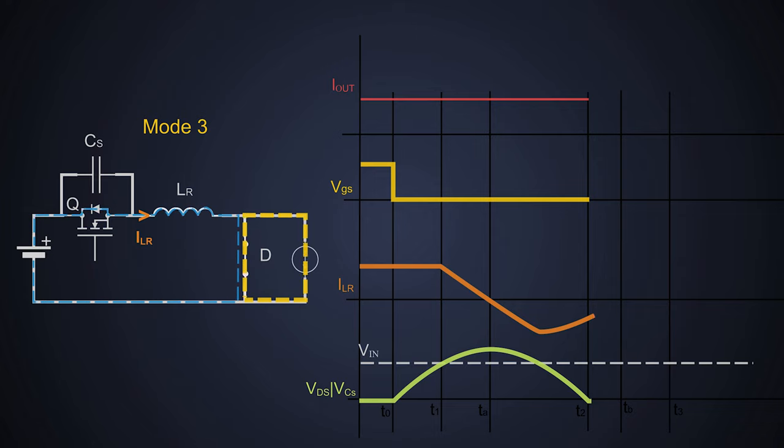This current keeps on flowing in this direction until the inductor is discharged and its current falls to zero. The time when it falls to zero can be considered TB, so a turn-on pulse should be provided to the MOSFET intelligently in between time T2 to TB. As the inductor current reaches to zero, Mode 4 starts.